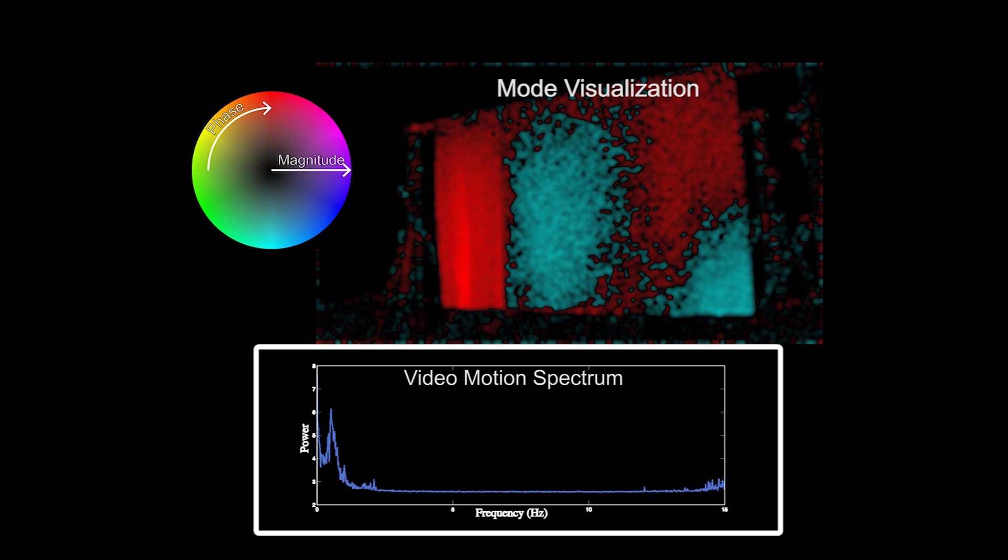And if we average the magnitudes of these spectra, we can compute a single power spectrum that summarizes the frequencies of motion in a video.